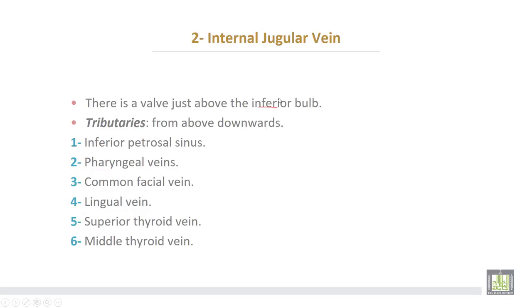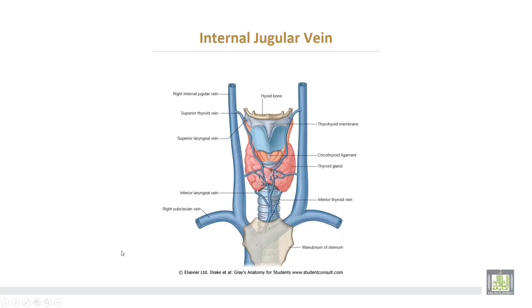The tributaries of the internal jugular vein from above downwards: number one, inferior petrosal sinus, coming out from the cranial cavity; then pharyngeal veins, common facial vein, lingual vein, superior thyroid and middle thyroid veins. Here we can see the internal jugular vein with some tributaries — superior thyroid vein, middle thyroid vein — and the internal jugular uniting with the subclavian vein.